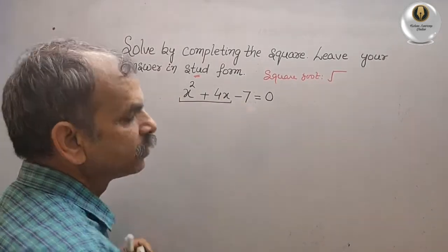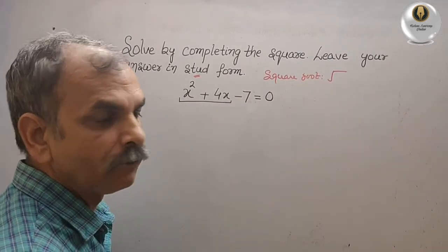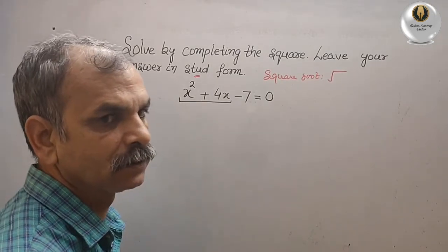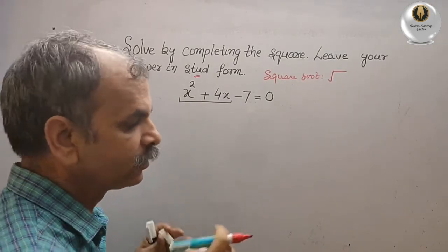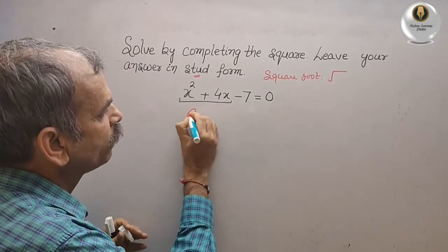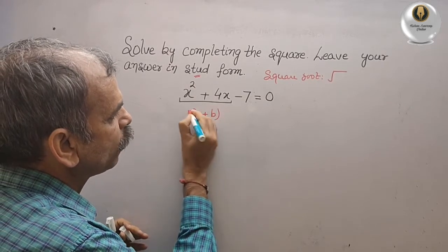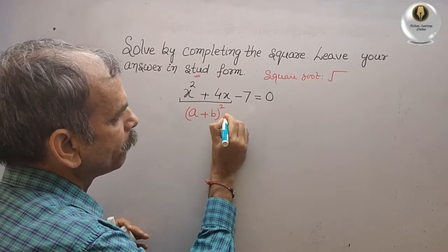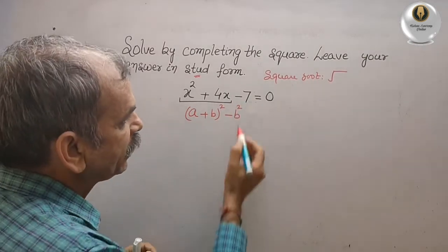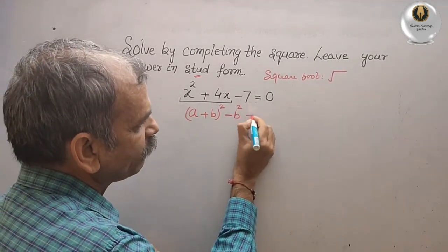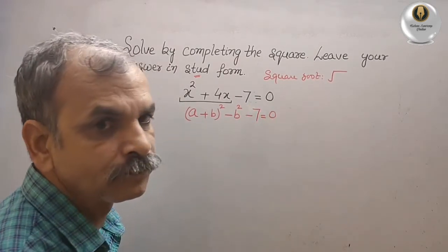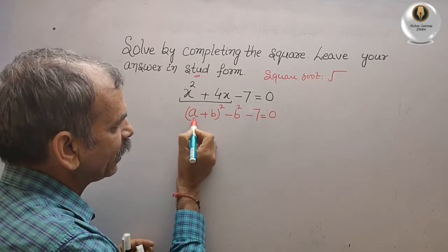From here to here, we can see in the center they have given you plus, that means addition. So what we have to do is convert this in the form of (a + b)² - b². And here they have given -7, that we have to write equals 0.